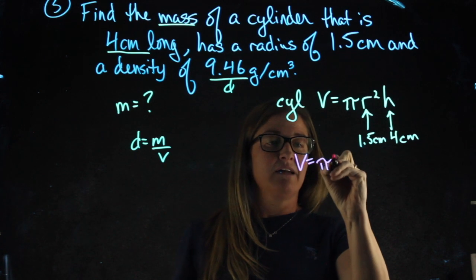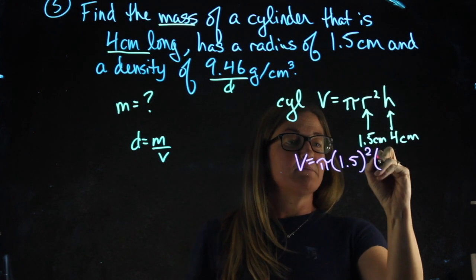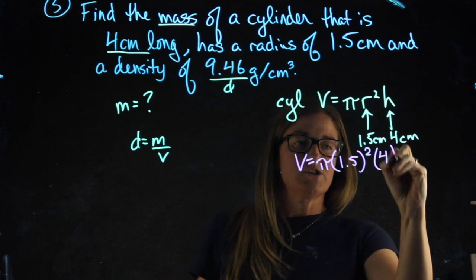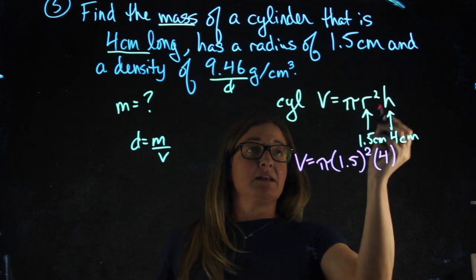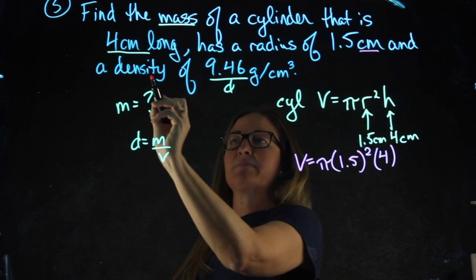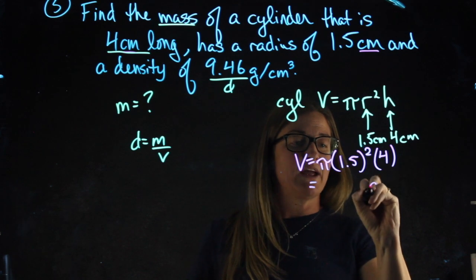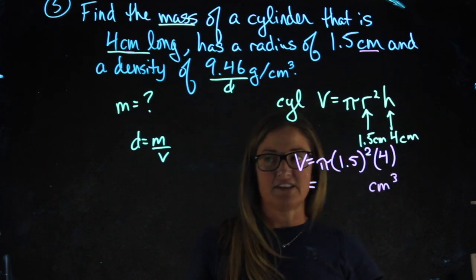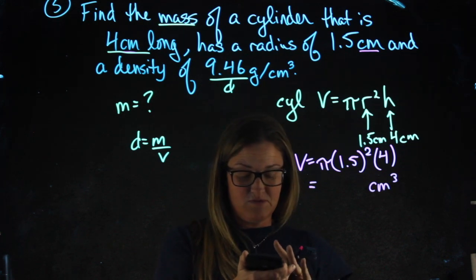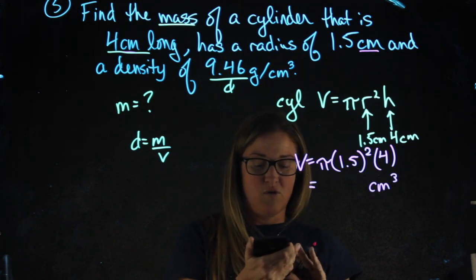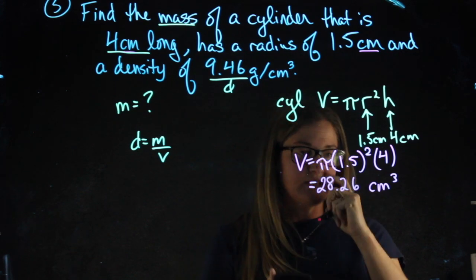Volume equals pi, plugging in my radius, 1.5 squared times the height or the length, which is 4. I did bother to check to make sure that all of my dimensions were in centimeters. And since all of my dimensions are in centimeters, when I get my volume, it's going to be in the units of centimeter cubed. So 3.14 times 1.5 squared times 4 gives me a volume of 28.26 centimeters cubed.